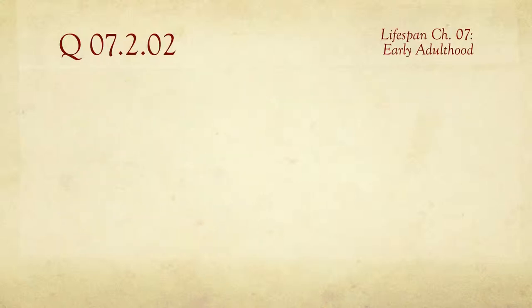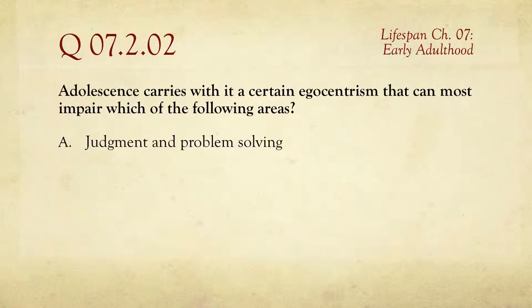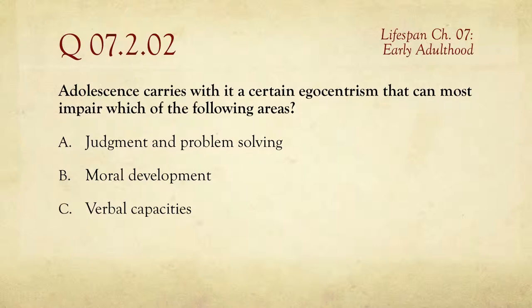The second question is: adolescence carries with it a certain egocentrism that can most impair which of the following areas? A, judgment and problem solving; B, moral development; C, verbal capacities; or D, quantitative capacities.